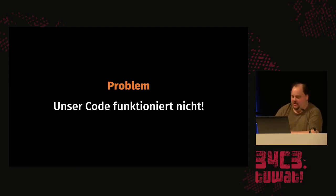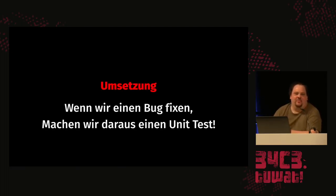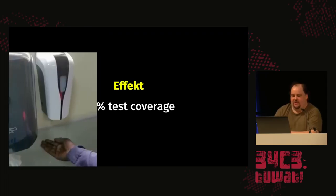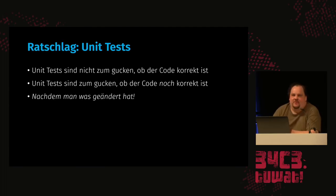The next problem: our code doesn't work. The solution is unit tests. In practice, we make a unit test when we fix a bug to check if it's fixed — and that gives you 2.3% test coverage. There was a soap dispenser made by white people; if someone with a different skin color went to it, they couldn't get soap. That's a classic case. Unit tests are not there to check if the code is correct — they're there to check if the code is *still* correct. When you make a change, you can tell if stuff still works, so you're not afraid to touch old code.